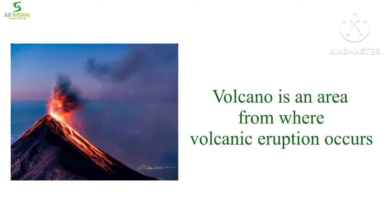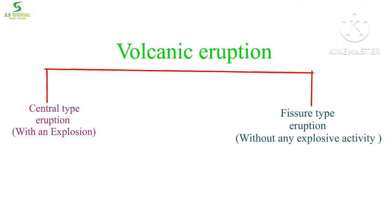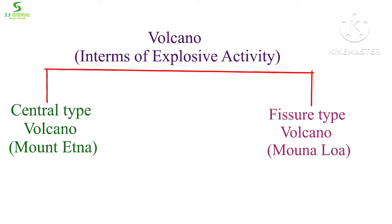A volcano is nothing but an area from where volcanic eruption takes place. There are mainly two types of volcanic eruption. One is central type volcanic eruption, where volcanic eruption takes place through a single pipe with an explosion, and the other is fissure type volcanic eruption, where volcanic eruption takes place without any explosive activity.